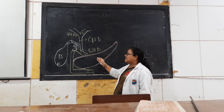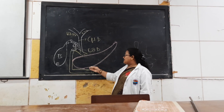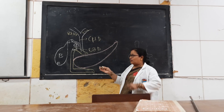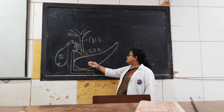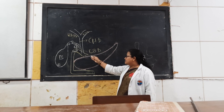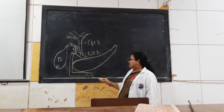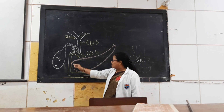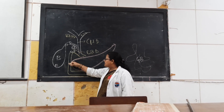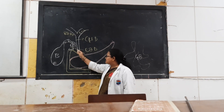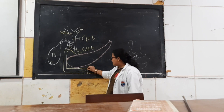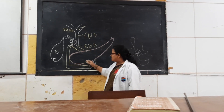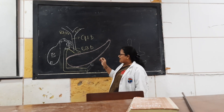The pancreas is both an exocrine and endocrine organ, which is 15 centimetres long and 3 to 4 centimetres in width. It lies within the concavity of the four parts of the duodenum.